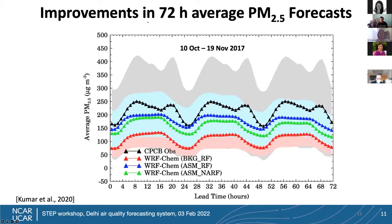Showing improvements in the 72-hour average PM2.5 forecast over October 10 to November 19, 2017: in black are the observations, in red the WRF-CAM forecast without AOD assimilation, and in blue the forecast with AOD assimilation plus aerosol-radiation feedback turned on — our best forecast. We significantly reduce the forecast error. Without aerosol-radiation feedback but still assimilating (green line), we see that aerosol-radiation interaction becomes more important at the most severe air pollution episodes.